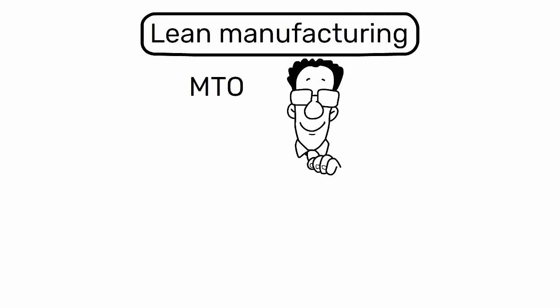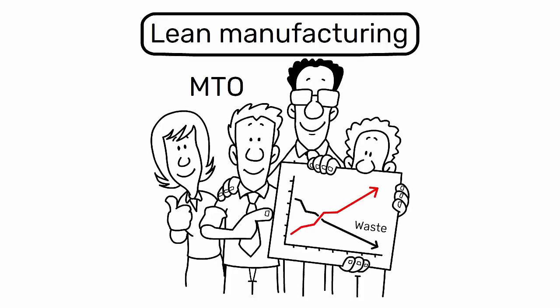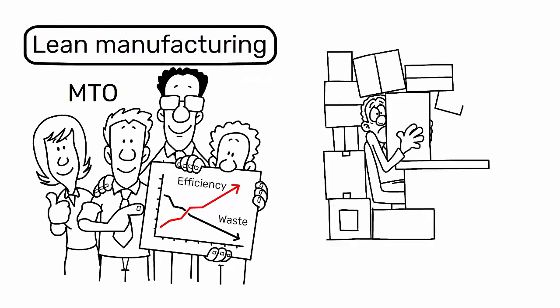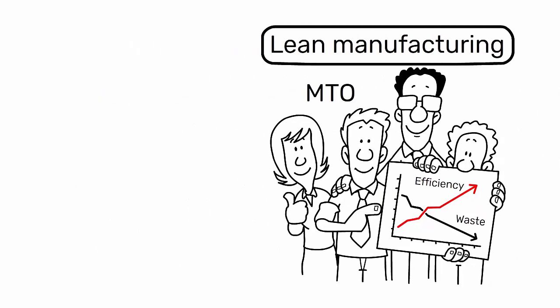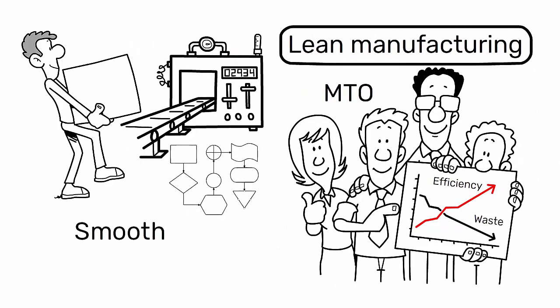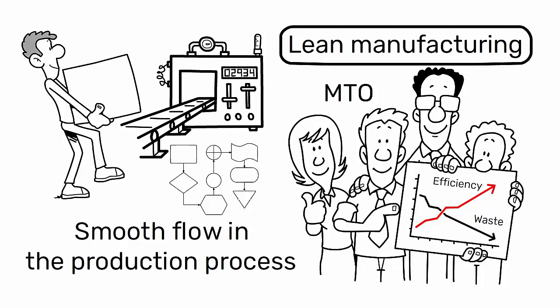In the context of lean manufacturing, MTO aligns with the principles of reducing waste and increasing efficiency. It allows for the reduction of waste associated with overproduction and excess inventory while increasing efficiency by enabling a smooth flow in the production process.